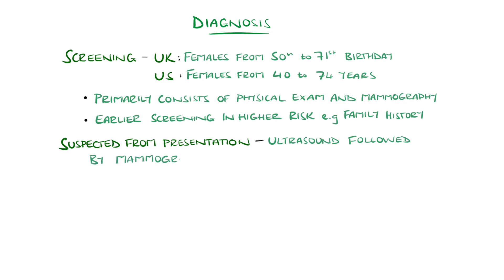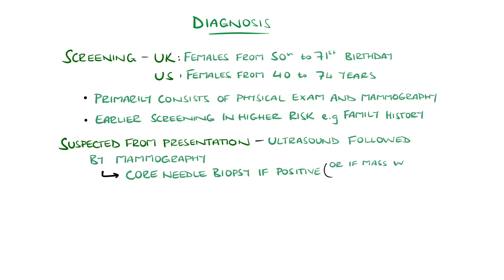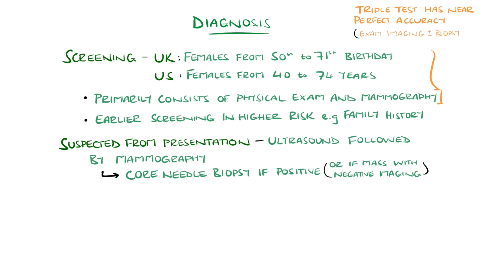If an abnormality is detected on initial imaging, or if there is a palpable mass despite negative imaging, then tissue sampling via biopsy is performed, with core needle biopsy being preferred. This involves analysing histology and receptor status. The triple test — featuring a clinical exam, imaging, and biopsy if indicated — has near-perfect diagnostic accuracy and is used especially in the UK triple assessment clinics.